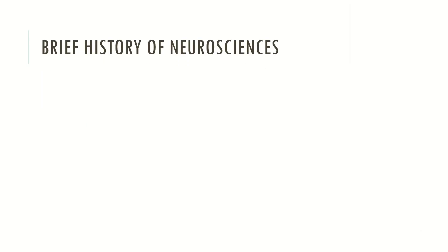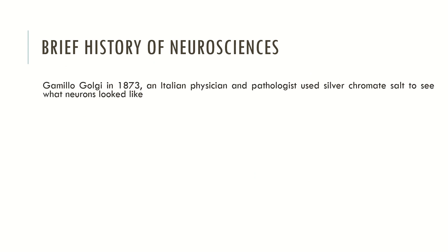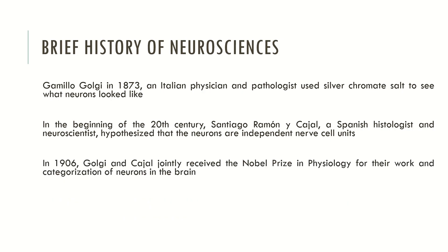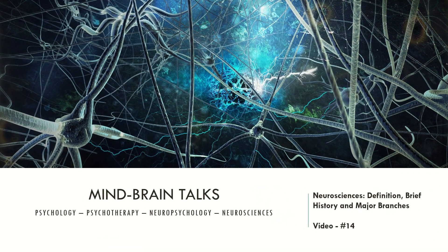Camillo Golgi, an Italian physician and pathologist, used silver chromate salt to see what neurons look like. In the beginning of the 20th century, Santiago Ramón y Cajal, a Spanish histologist and neuroscientist, hypothesized that neurons are independent nerve cell units. Golgi and Cajal jointly received the Nobel Prize in Physiology for their work and categorization of neurons in the brain. Since the 1950s, research and practice in Neurosciences have led to great advances in our understanding of the brain, nervous system and general neurosciences. In the future, I will produce a more in-depth video covering how specific events and contributions were essential to understanding neural networks, cognition and behavior.